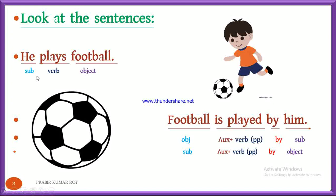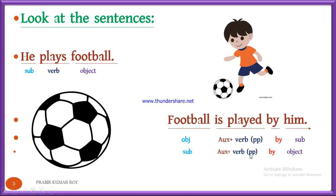Now let us see the structure of active and passive voice. In active voice, the structure is: subject plus verb plus object. But the structure of passive voice is reverse. At the very beginning we have the object, and at last we have the subject. The object of the active voice becomes the subject of the passive voice. Then we have to use an auxiliary verb, then the past participle form of the verb, then 'by', and last of all the subject of the active voice becomes the object of the passive voice.